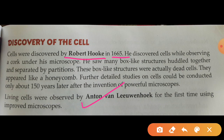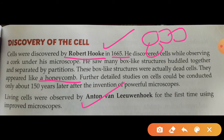Robert Hooke observed the cell under his own self-made microscope, which was not so advanced or refined. He reported all his observations in Micrographia. What he observed was a honeycomb-like structure with nothing inside — no nucleus, no cytoplasm — because the cells were dead cells.